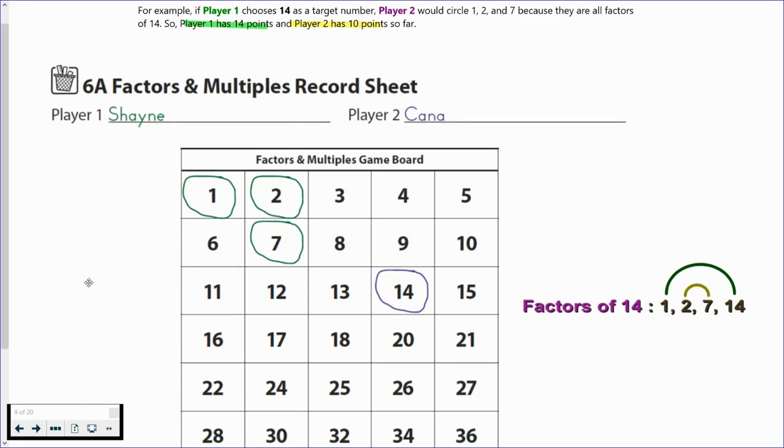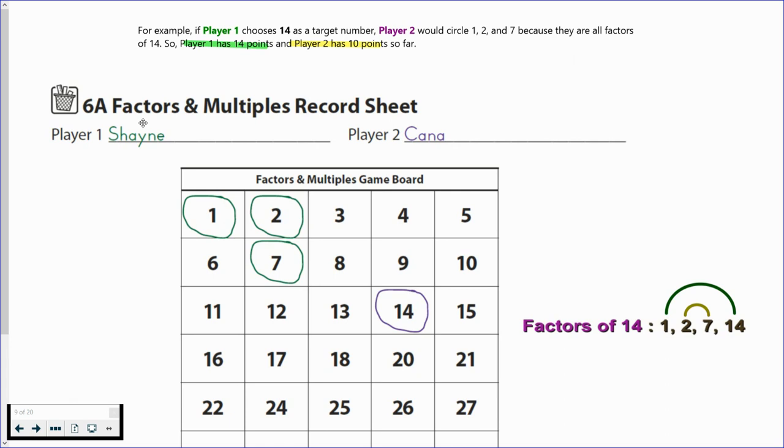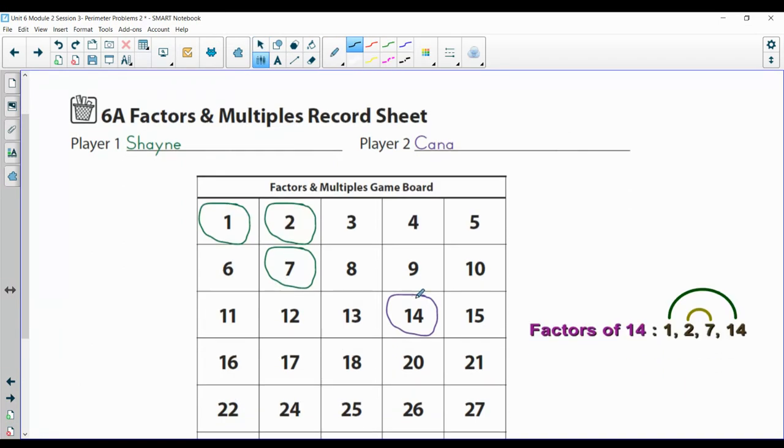I'm going to give you a for instance here. Say Shane, player one, chooses 14 right on here. So right here is where Shane's going to circle and he has 14 points. Now Canada is the second and she's going to choose a different color. What she's going to do is the rainbow factors for that number. So 1, 14, 2, 7. She can't choose 14 again though. So she has this one, the 1, 2, and 7. So Shane's going to start off with his 14 points and Canada's going to start off with 1 plus 2 plus 7, which is 10.